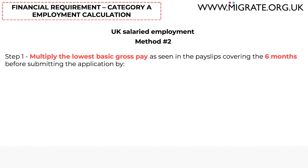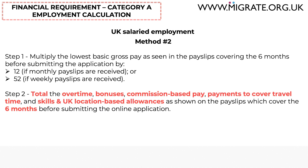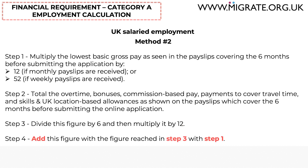The second method involves the following steps. Step 1: multiply the lowest basic gross pay as seen in the pay slips covering the six months prior to submitting the online application by 12 if monthly, or by 52 if weekly. This figure will be the gross annual basic salary includable towards the financial requirement. Step 2: total the overtime, bonuses, commission-based pay, payments covering travel time, and skills and UK location-based allowances, as shown in the pay slips covering the six months before submitting the application. Step 3: divide the step 2 figure by 6, then multiply by 12. Step 4: add the step 3 figure to the step 1 figure. The result is the total amount of salaried employment income that can be included towards the financial requirement.